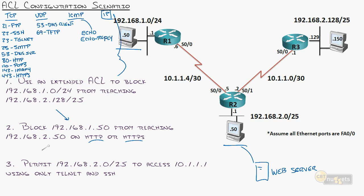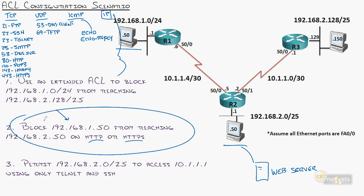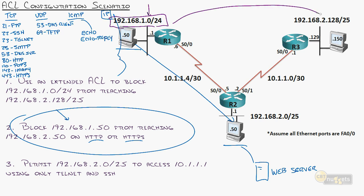Back to the objective: block 192.168.1.50 from reaching 192.168.2.50 — probably a web server — on ports 80 and 443. I want to take this opportunity to show how to edit an access list. We already have in scenario one blocked this subnet from reaching over there on everything. So now in addition to that, I want to block this one IP on HTTP and HTTPS. We've already got an access list applied inbound that we can edit to add those restrictions.